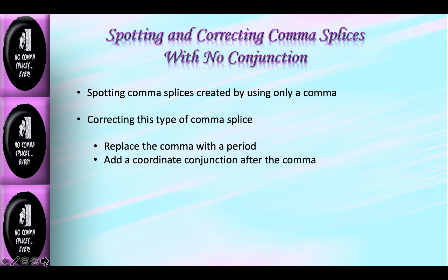But if you want to continue to indicate that close connection, there are three other methods you can use. You can correct the comma splice by adding a coordinating conjunction after the comma, because two independent clauses can be connected by a comma and a coordinating conjunction. The coordinating conjunctions are AND, BUT, OR, FOR, NOR, SO, YET. The acronym FANBOYS can help you remember that list: FOR, AND, NOR, BUT, OR, YET, SO.